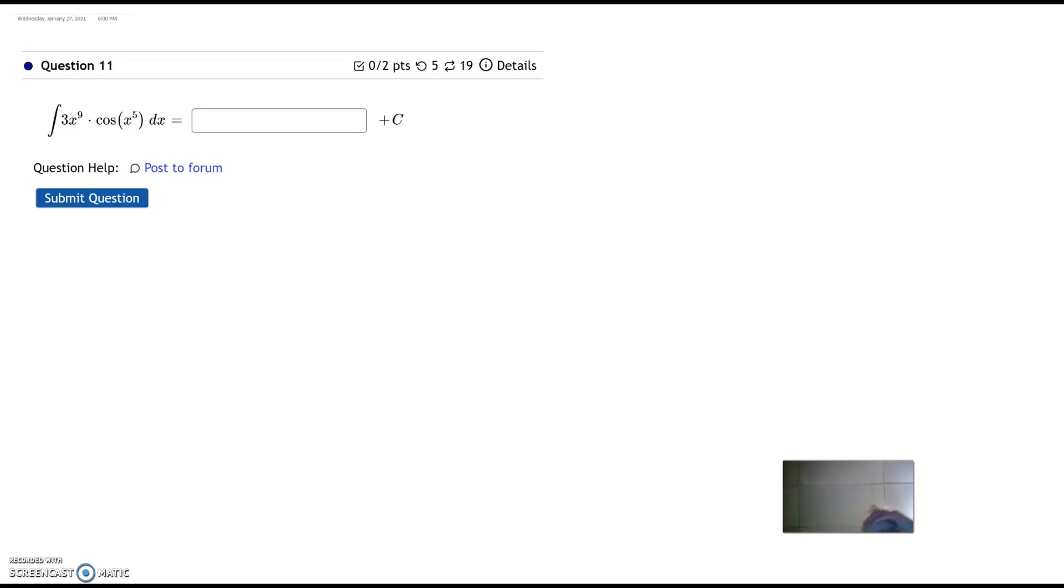So first of all, a couple thoughts come to my mind in the beginning. The first is, I've got a function within a function. I've got the x fifth embedded within cosine. So that tells me u substitution.